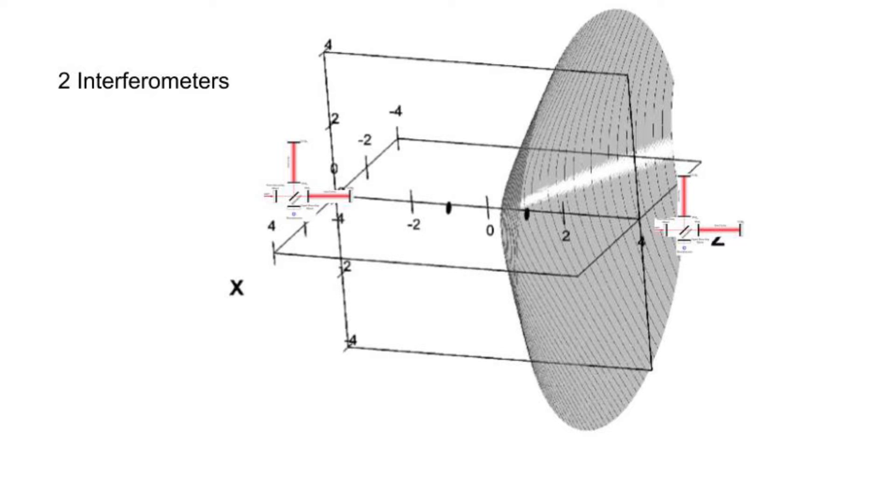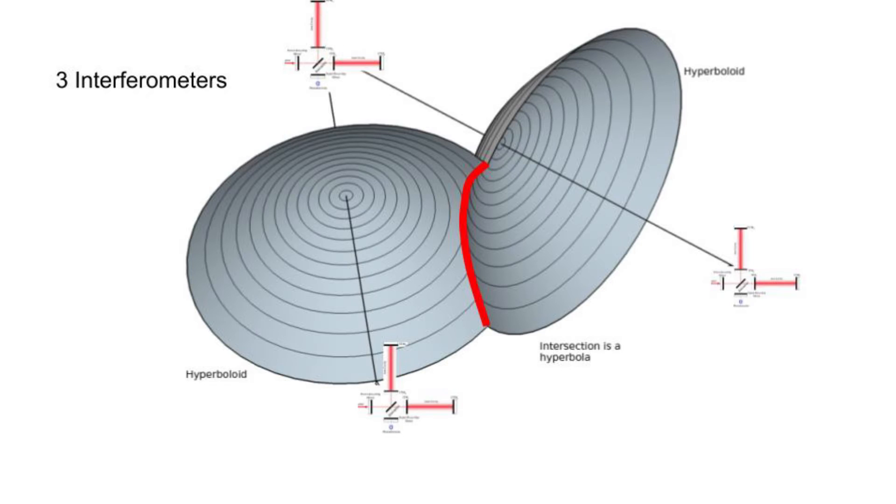Well, for 3D case, with only 2 interferometers, you can only conclude that the source must lie on a cone.